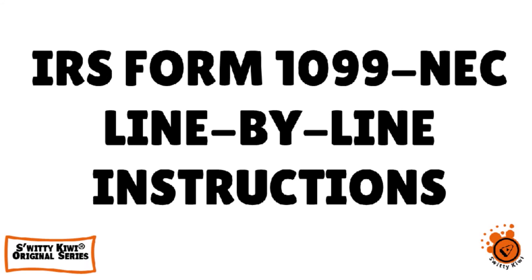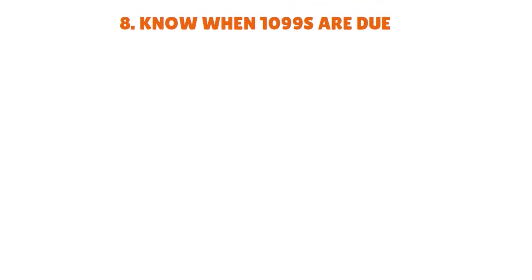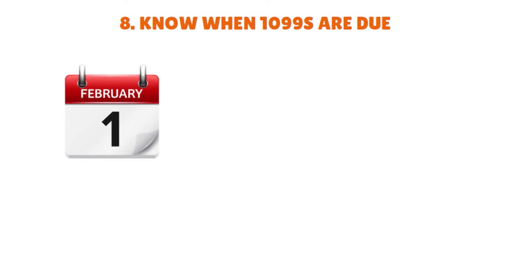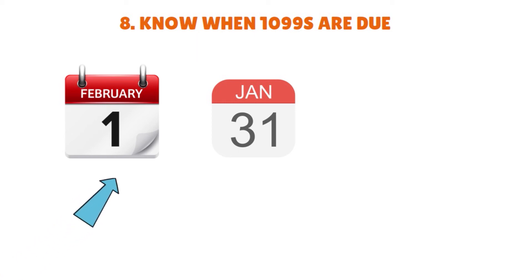Welcome back. Now I want to talk about when 1099s are due. The deadline is January 31st, or the next business day if the 31st falls on a Saturday, Sunday, or federal legal holiday. For 2021 the deadline is February 1st; for 2022 the deadline is January 31st. The deadline to file Copy A with the IRS is February 1st, 2021. The deadline for sending Copy B to your contractors is also February 1st, 2021. As a contractor, if you don't receive a 1099 from a business, it is your client's responsibility to send you a completed copy by the deadline.